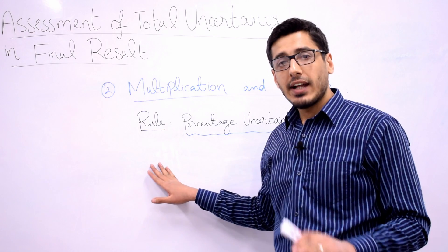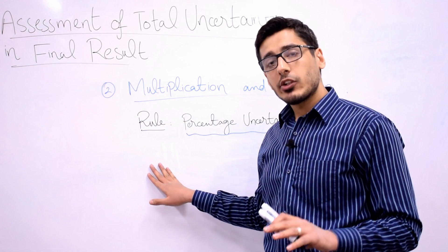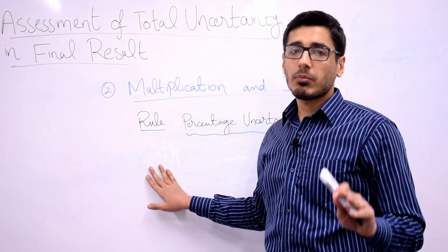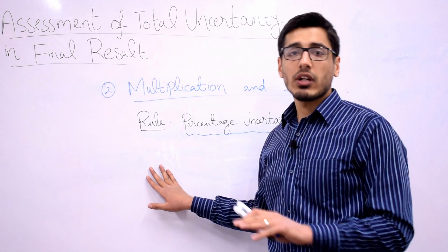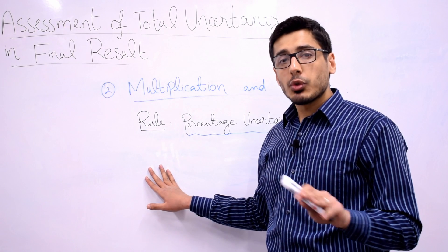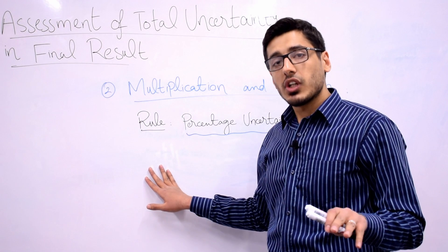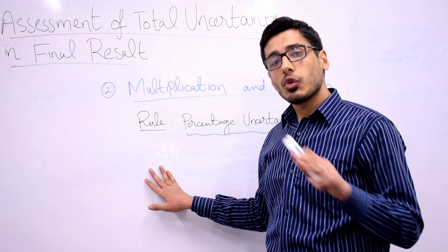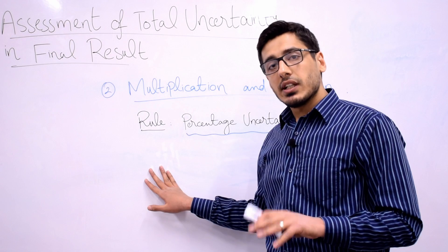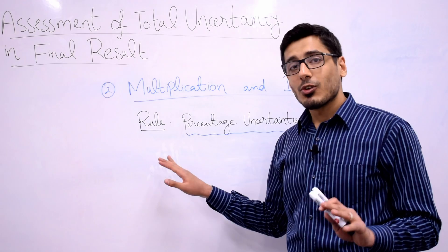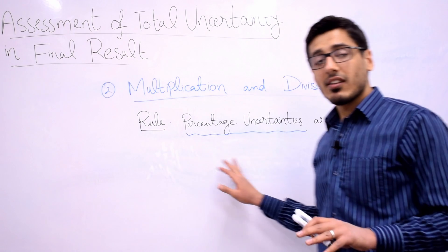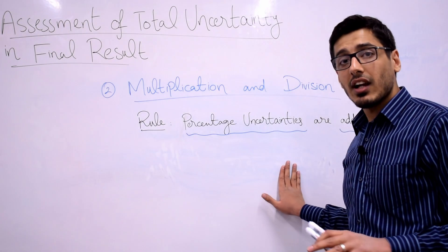The problem is that you have two measurements and you are either multiplying them or dividing them, and you don't know what to do with their associated uncertainties to come up with the final uncertainty in the result. The rule says that percentage uncertainties are added.